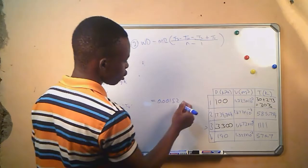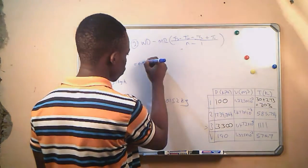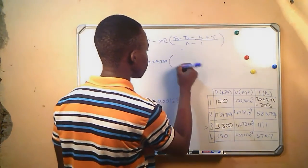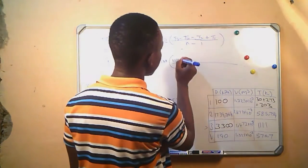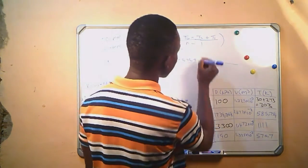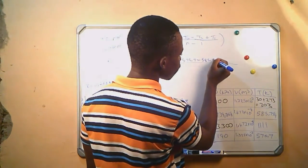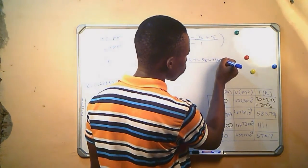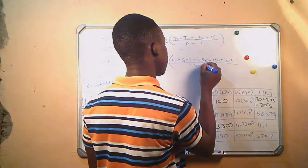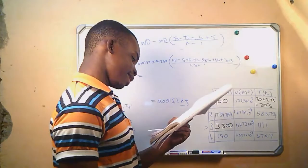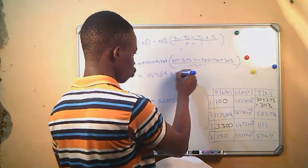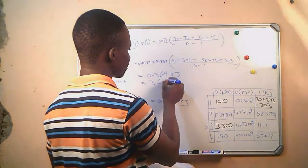Substituting into the work done formula: 0.00152 times 0.288 times (T3 minus T4 minus T2 plus T1) divided by (1.3 minus 1). The temperatures are T3 equals 1111, T4 equals 575.7, T2 equals 585.754, and T1 equals 303 Kelvin. We get work done equals 0.369 kilojoules, which is the same as 369 joules per cycle.